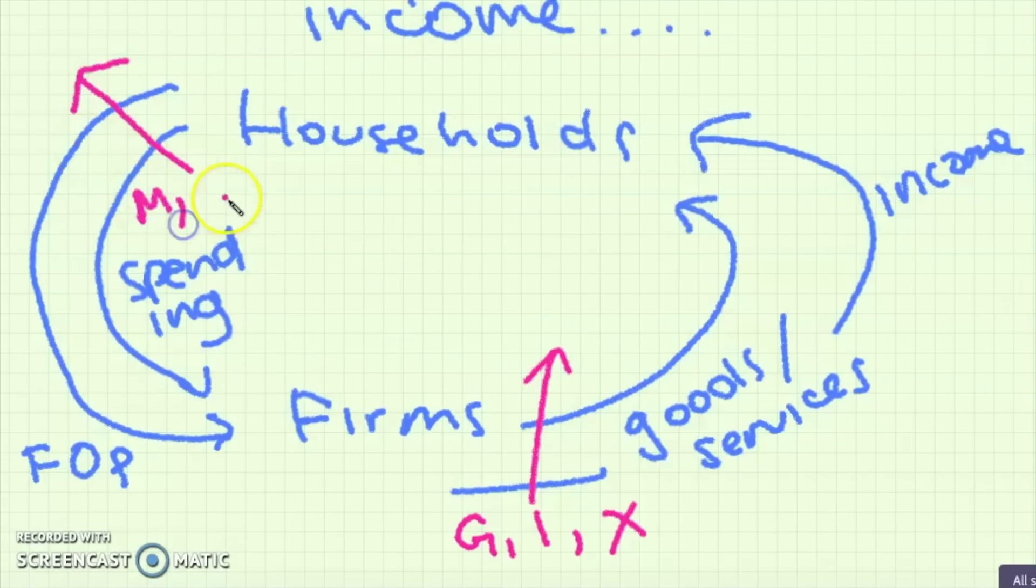But we also have leakages and injections. Injections would be things like government spending, investment and exports whereas leakages to the circular flow of income would be savings, taxes and imports.